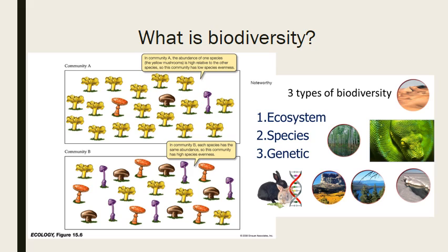Species evenness is a measure of whether or not the ecosystem is dominated by one species or another. Looking at two communities — community A and community B — both are species rich with four different species each. However, community A has a lower species evenness because it is dominated by the yellow mushrooms, while community B has a much higher species evenness because the species appear to be pretty evenly distributed throughout the community.